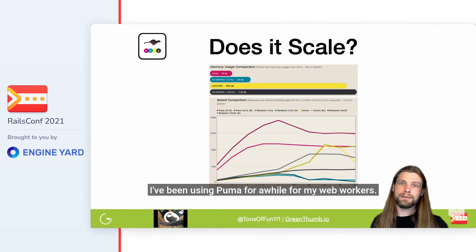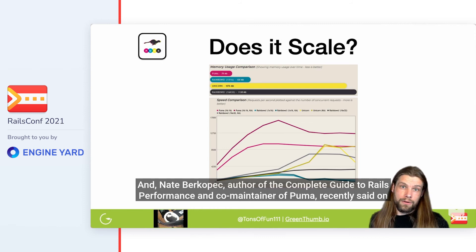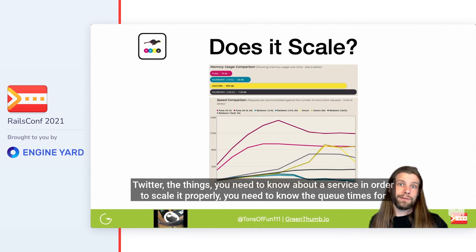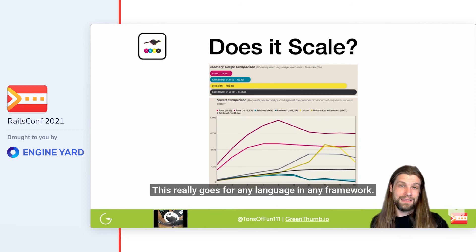Now the question — does it scale? Short answer is yes. The things you need to know about a service in order to scale it properly are: queue times for work, jobs, and requests; average processing time and arrival rate for work and jobs; CPU load utilization; and CPU count and memory utilization of the underlying machine. This really goes for any language and any framework.